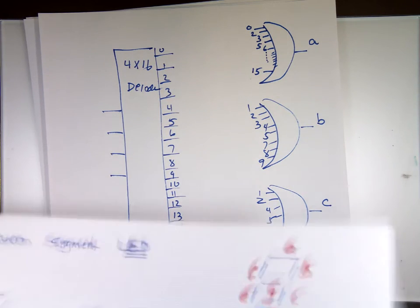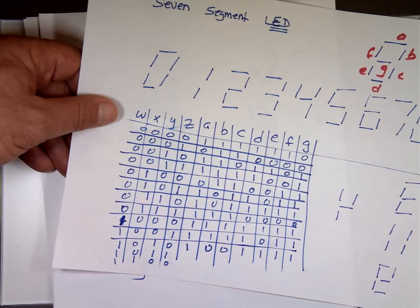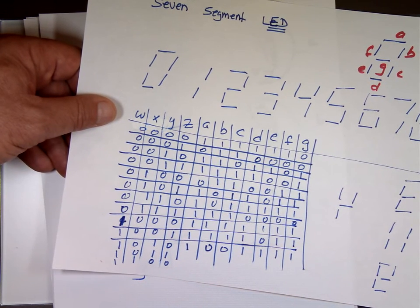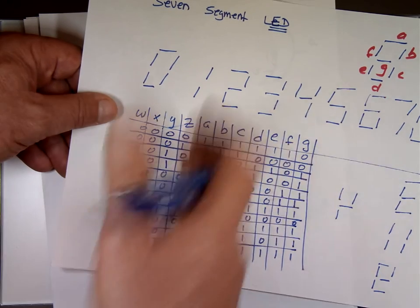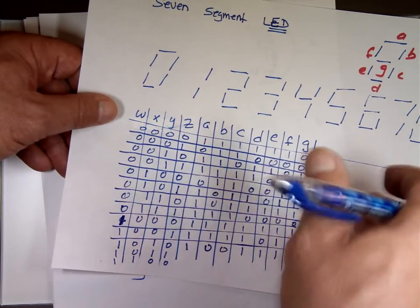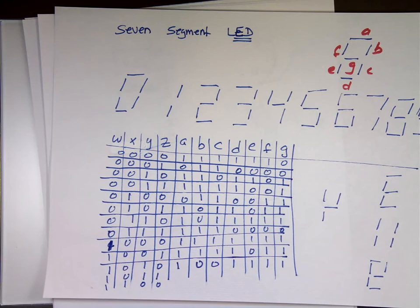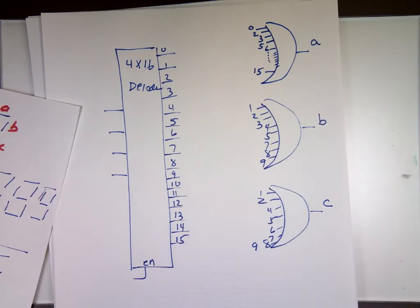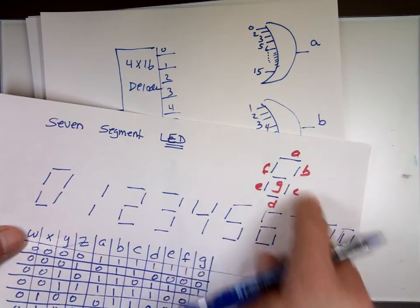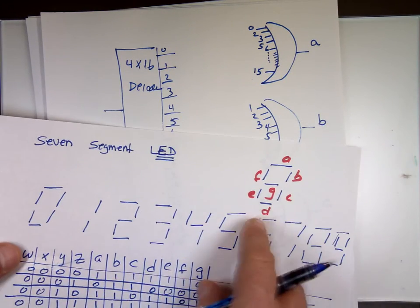If you decide to do the K map and simplify each one, that might be easier. Less gates. You do one for A, one for B, one for C, one for D, and you attach them. But that circuit rebuilding, we take the A's, attach that A to this one, attach the B to this, attach the C to this, the D, the E, the F, and the G.